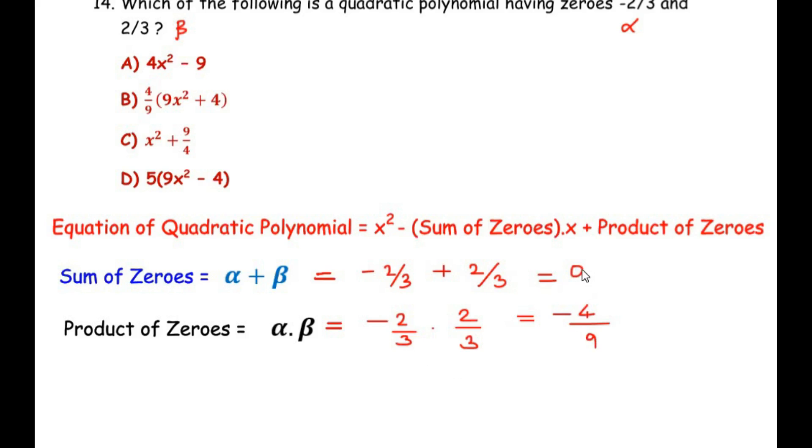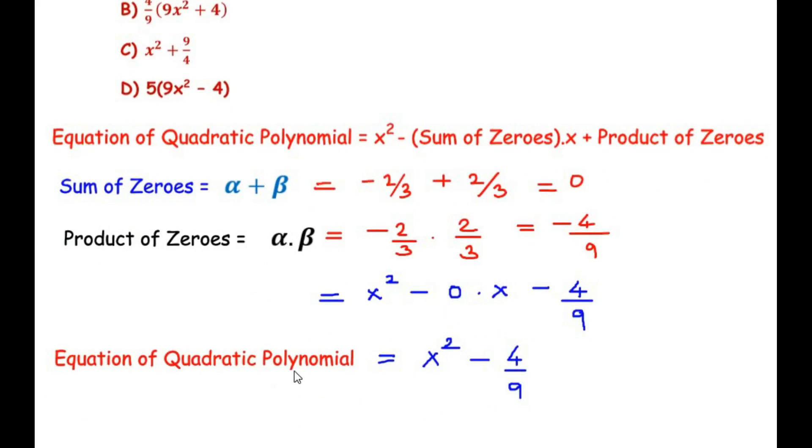Which means we have got the sum of zeros as 0 and product of zeros as -4/9. So here substituting the value of sum of zeros as 0 we get x² - 0×x + (-4/9). Now simplifying this we get the equation of the quadratic polynomial as x² - 4/9.